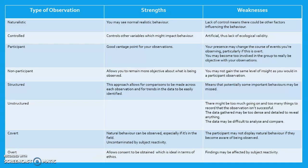The strengths of a participant observation are that the observer has a good vantage point for their observations. The weaknesses are that the observer's presence may change the course of events they're observing, particularly if it is overt. However, you may become too involved in the group to really be objective with your observations. Non-participant observation allows you to remain more objective about what is being observed, but you may not gain the same level of insight as you would in a participant observation.